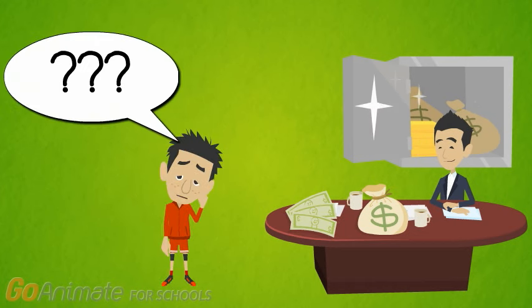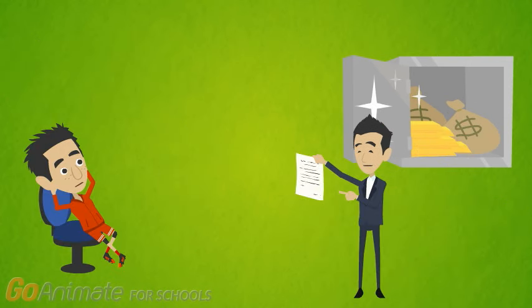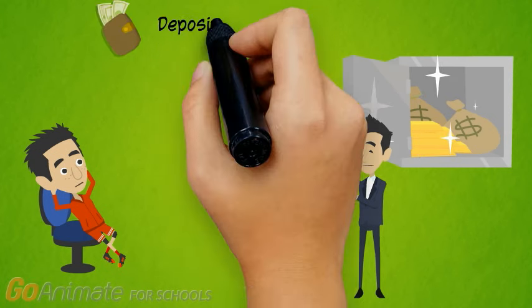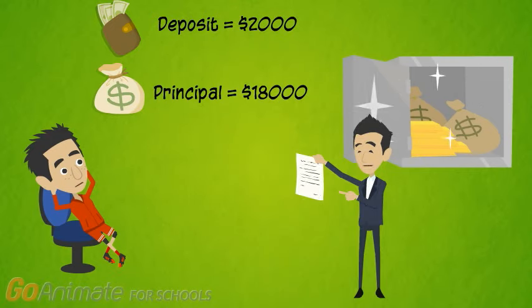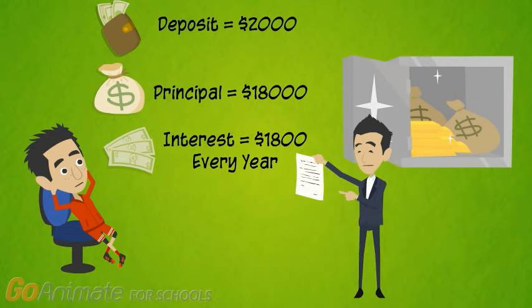So how much will this fee cost me? says Billy. Well, says Mr Bank, we loan money at an interest rate of 10% per year. In your case, given you already have a $2,000 deposit, we will loan you $18,000. This will cost you $1,800 interest every year.